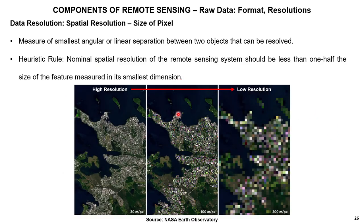Spatial resolution is the smallest angular or linear separation between two objects that can be resolved. As a design thumb rule, nominal spatial resolution should be less than half the size of the smallest feature dimension. As you move from high to low resolution, the same area looks progressively less detailed — for example, 30 m × 30 m, 100 m × 100 m, and 300 m × 300 m pixels show decreasing detail.